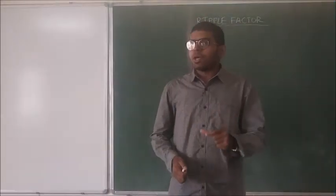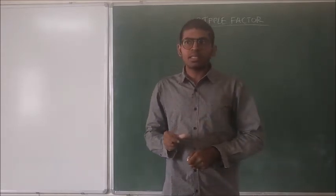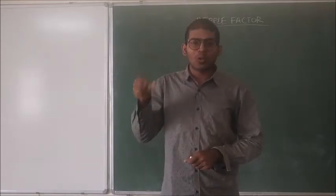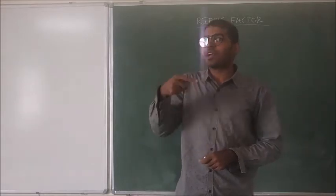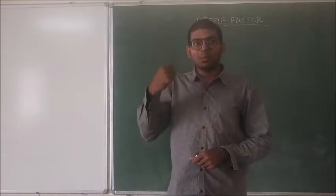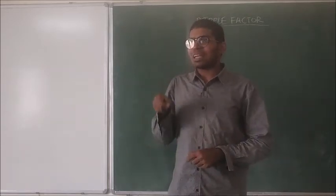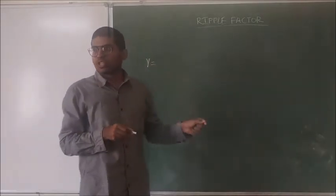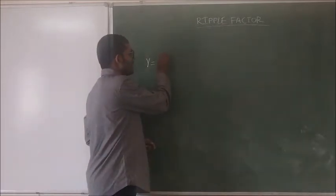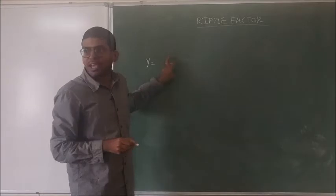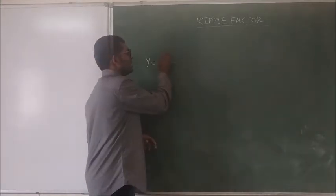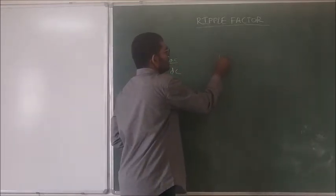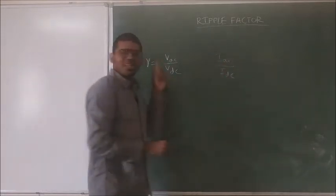Now we are discussing the ripple factor. As the name indicates, this factor tells what is the percentage of ripple in the output of a rectifier. We have seen the full wave rectifier and half wave rectifier and calculated the RMS values and DC values. Now we are calculating the ripple factor value. This ripple factor is indicated with gamma, and it tells what is the output AC divided by output DC — that is, VAC by VDC.